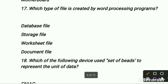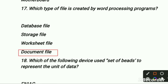Which type of file is created by a word processing program? First is data file, second is storage file, third is worksheet file, fourth is document file. Our right option is document file — fourth option — because a document file is a file created by a word processing program.